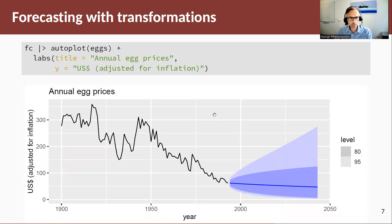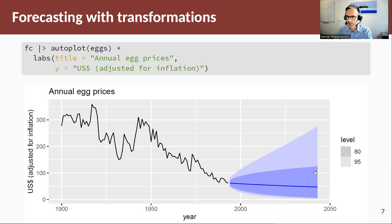Let's have a look at this graphically. Here I'm generating the 50 steps ahead — 50 years ahead — forecast and plotting them. You can see that the log transformation has worked quite well, and the effect of it is that we get an asymmetric distribution in our prediction intervals. This blue line is actually the mean.